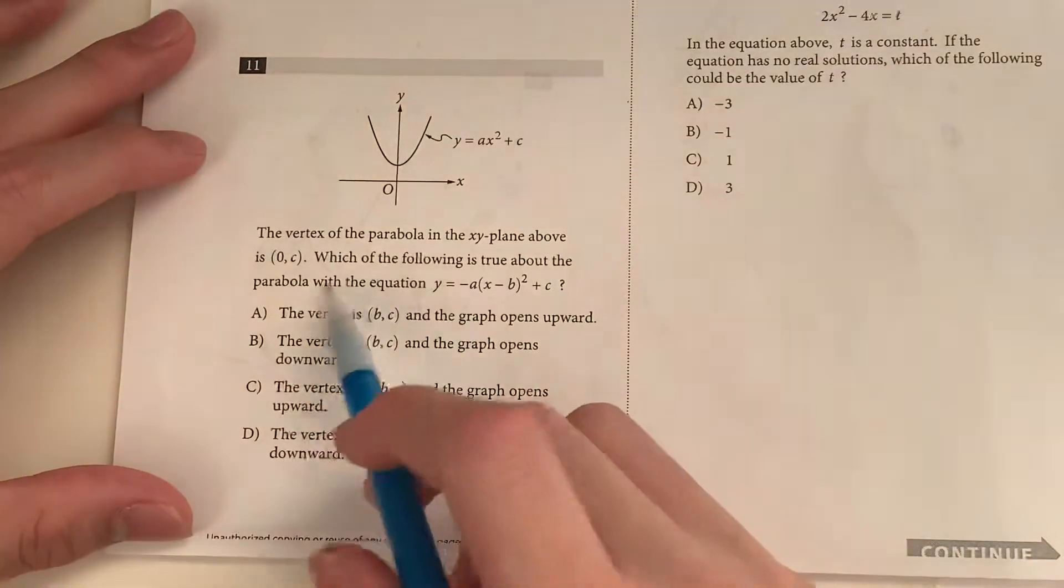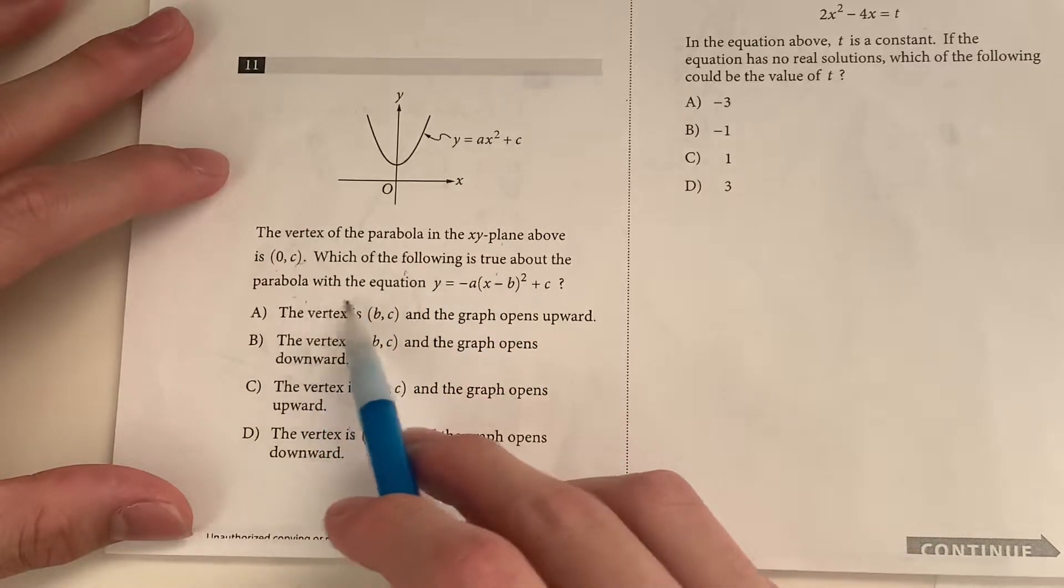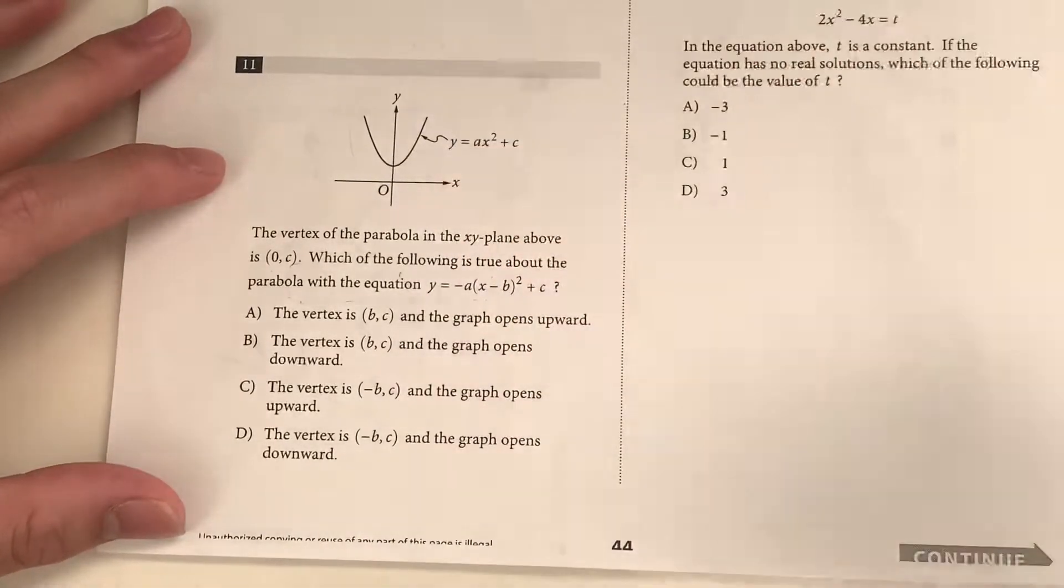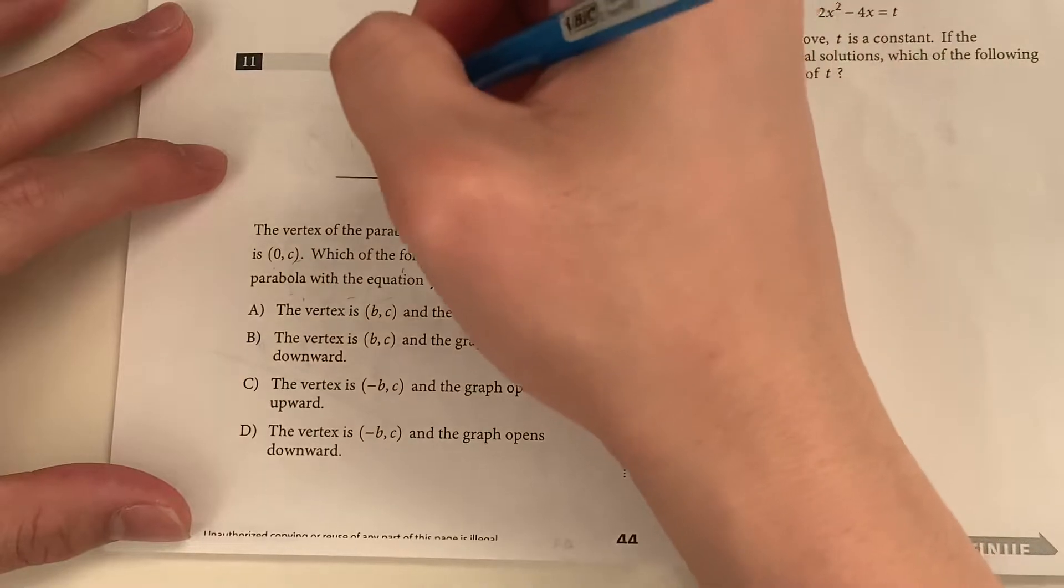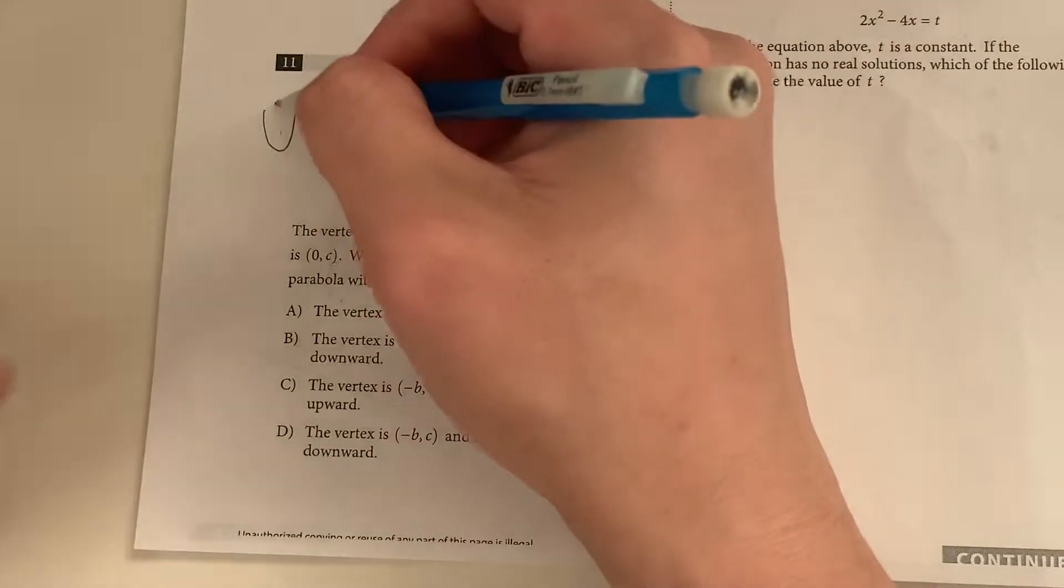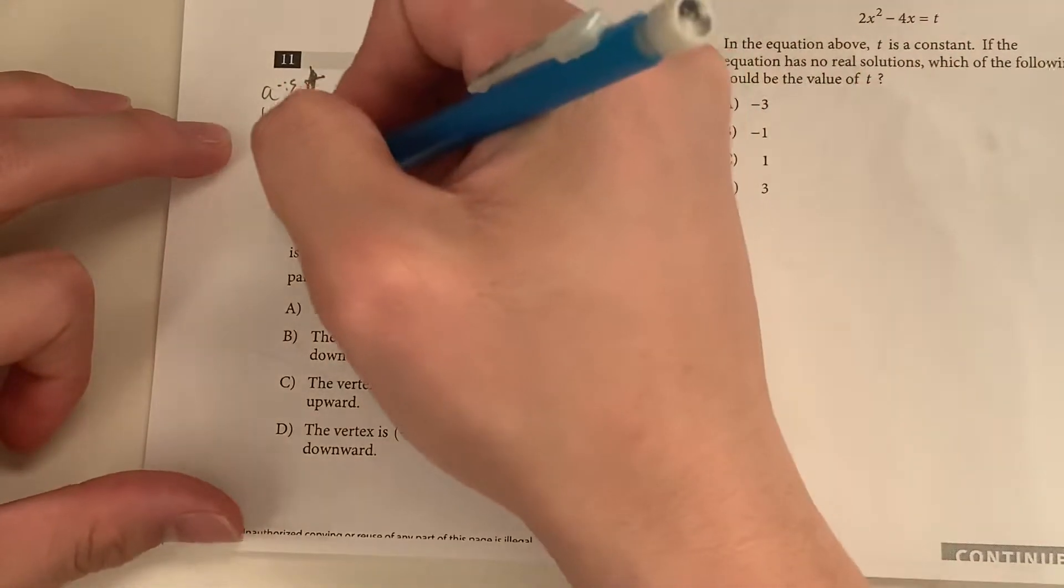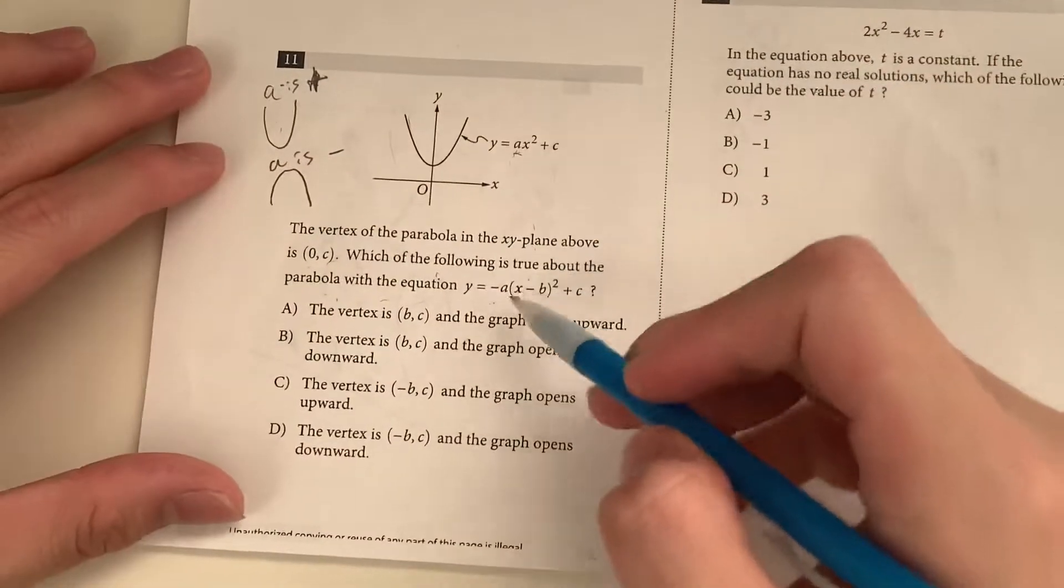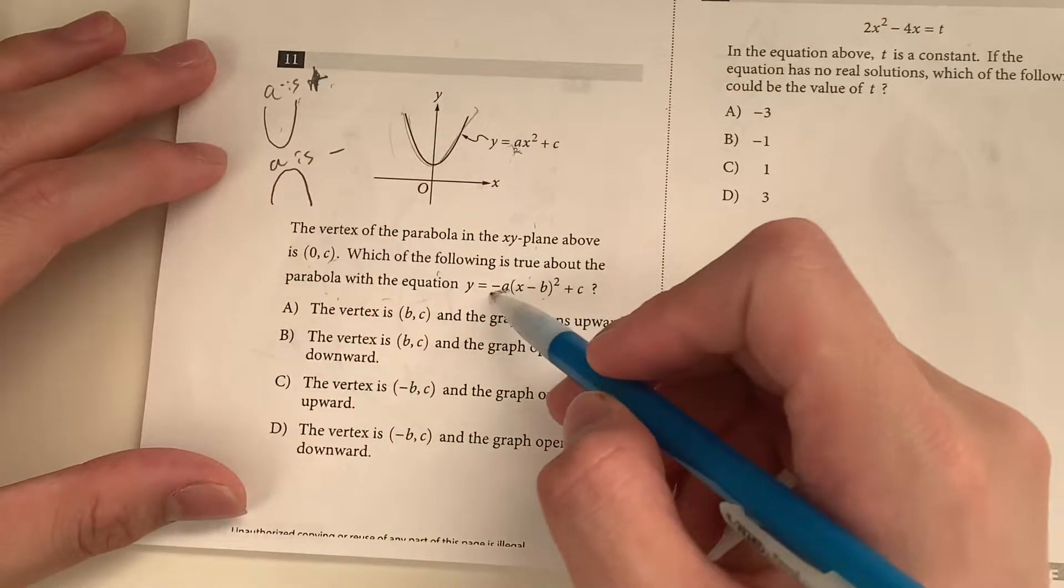Question 11. So looking at the equation that they gave us, we have A, right? We know that A is positive because it's a smiley face. So remember, if it's a smiley face, it means A is positive. And if it's a sad face, it's going to be A is negative. So in this case, if A is smiley face, it means A is positive. So this negative A has to be negative.